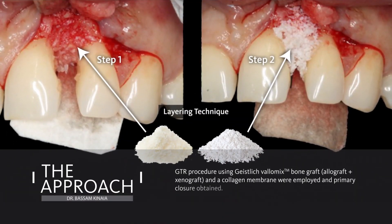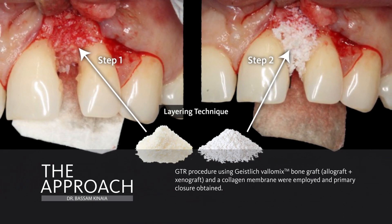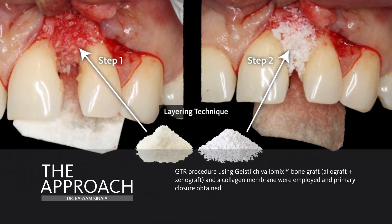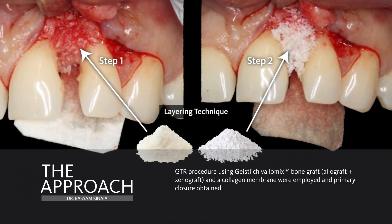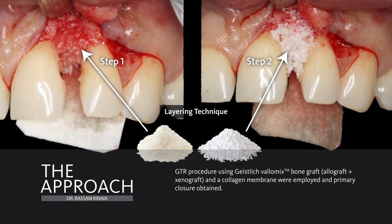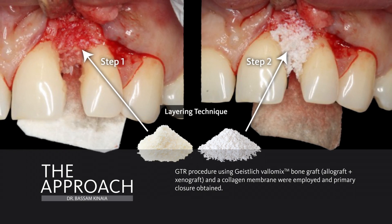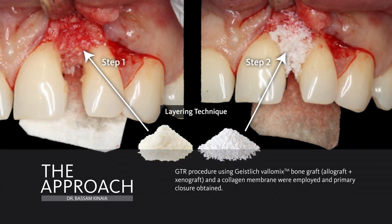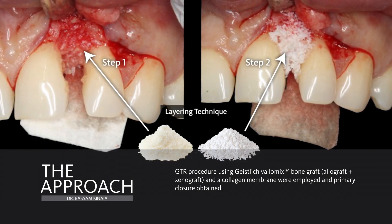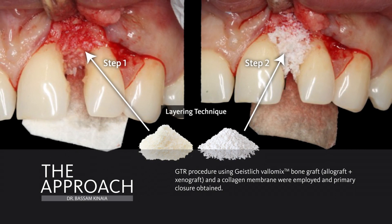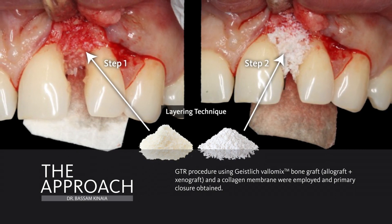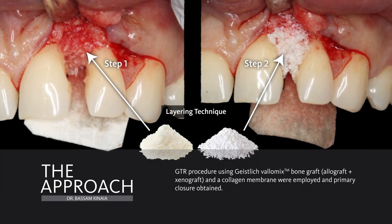You can see the allograft is placed internally right between number 9 and 10, but also wrapping on the palatal surfaces, while the xenograft is layered as a second layer externally to maintain the space — and that is the advantage of using the Valomix material for such large and deep bony defects.